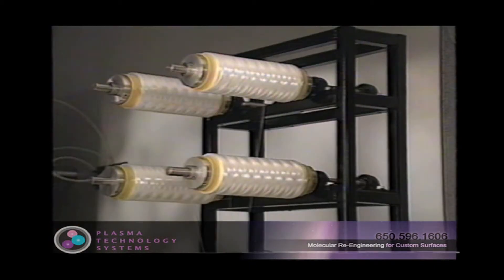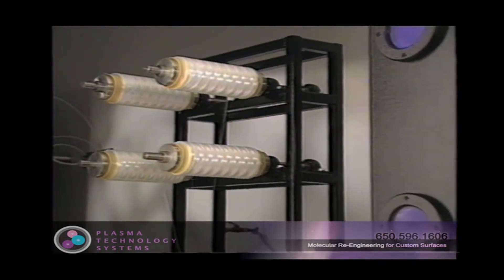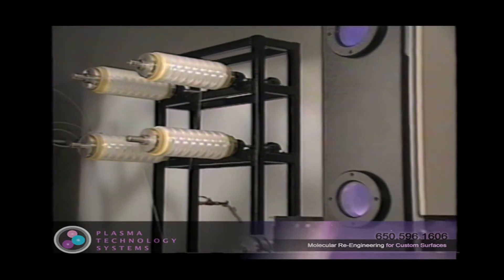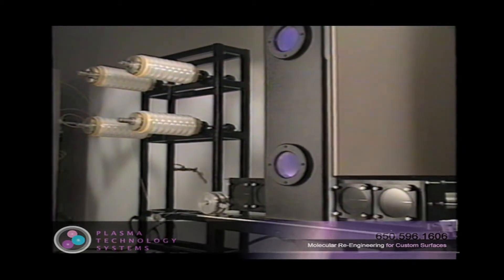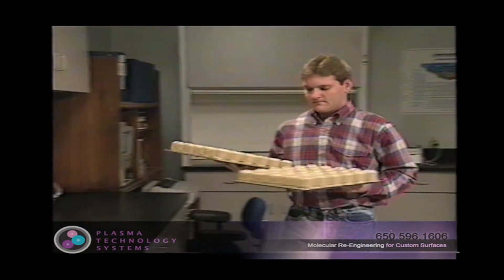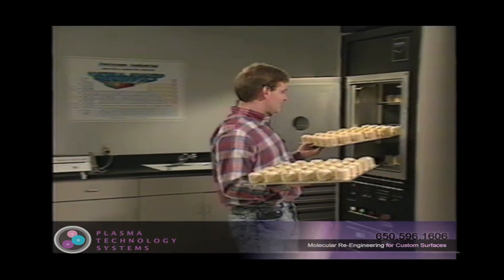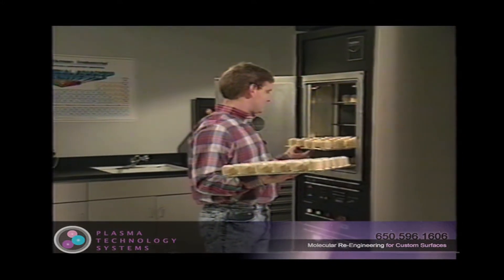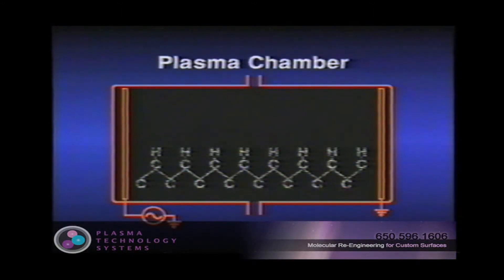Plasma science has developed systems for processing a wide variety of products, including fibers, cords, films, and large molded parts. In a simple batch process, the parts to be treated are placed into the vacuum chamber, the door closed, and the chamber pressure reduced.